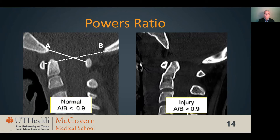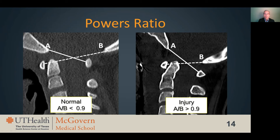The Powers ratio is the ratio of a line drawn from the basion to the posterior arch of C1 (line A), and a line drawn from the opisthion to the anterior arch of C1 (line B). Most cranial cervical injuries result in the skull sliding forward, which lengthens line A and shortens line B, leading to an increase in the Powers ratio. There is debate about what is considered a normal ratio. Originally a ratio greater than one was recommended, but more recent studies suggest a ratio greater than 0.9 suggests injury, which I have found to be a more accurate cutoff value.